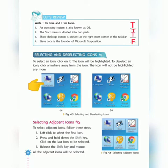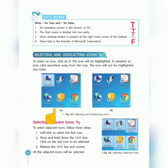To select an icon, click on it — the icon will be highlighted. To deselect an icon, click anywhere away from the icon — the icon will not be highlighted anymore, meaning it is deselected. As shown in figure 4.5, part A shows the computer icon highlighted (selected), and part B shows it unselected (deselected).